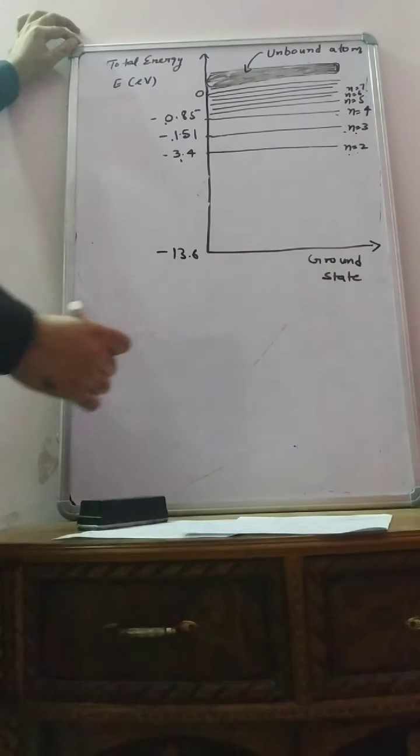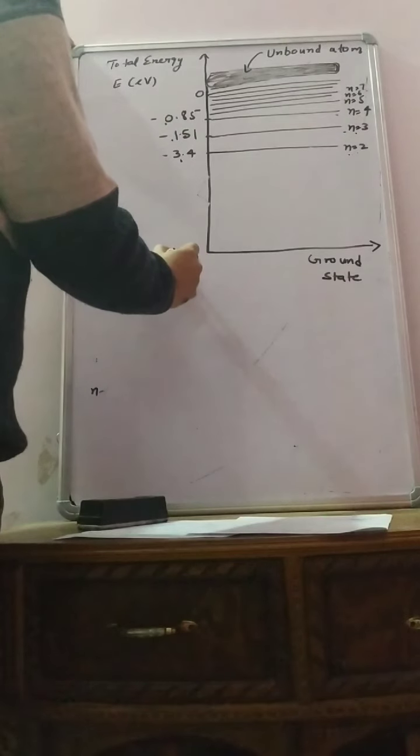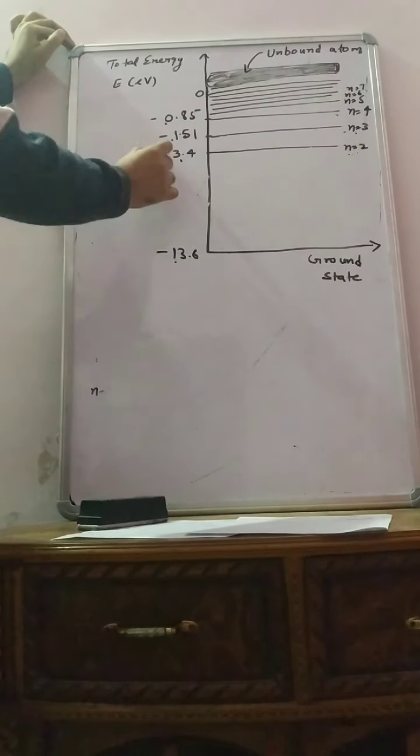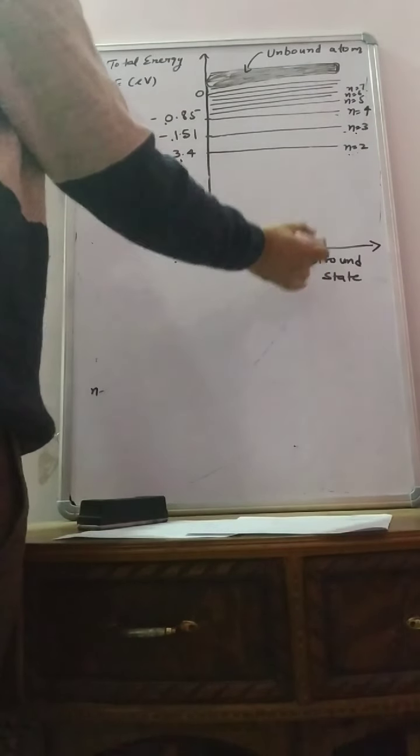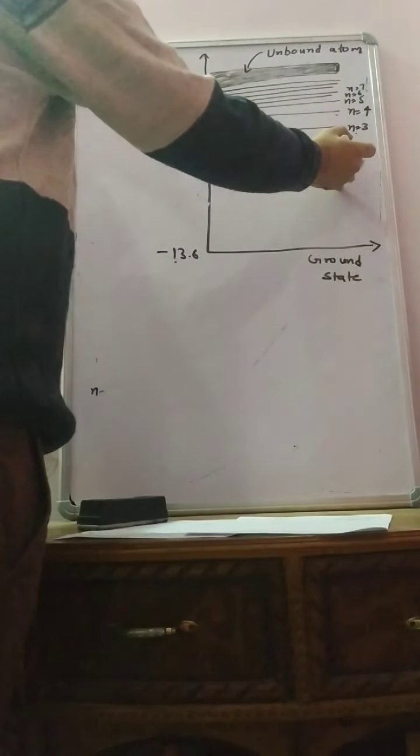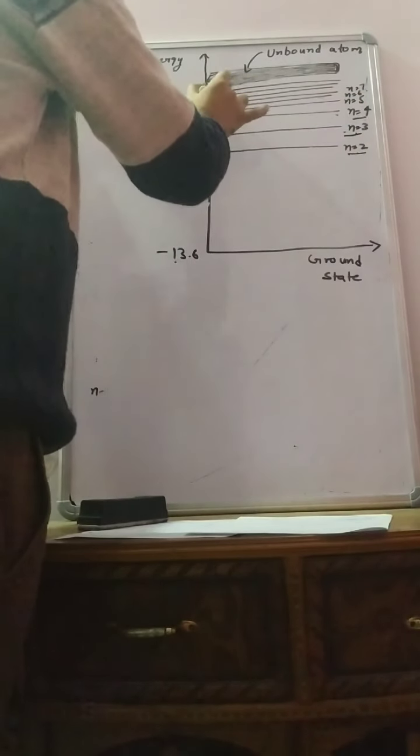We continue the energy level. We have seen this ground state of energy E1, similarly E2, minus 3.4 E3, E4. We call ground state and excited state. This is your first excited state, second excited state, third excited state.